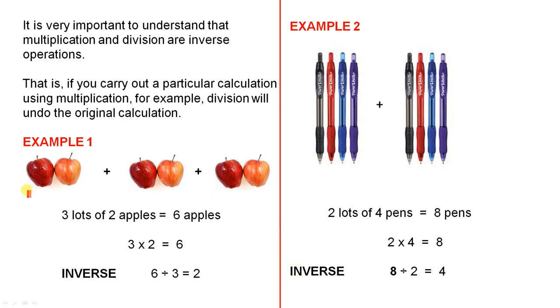Here we have a group of two apples and another group of two apples and another group of two apples. Altogether there are three groups, each containing two apples, or we can call them three lots of two apples. So, three lots of two apples equals six apples. In mathematical terms, that can be represented as three times two equals six.